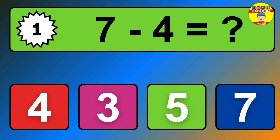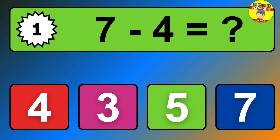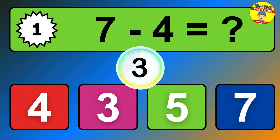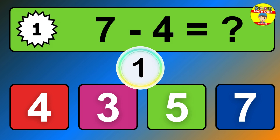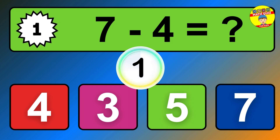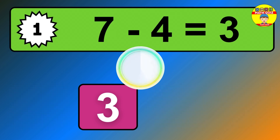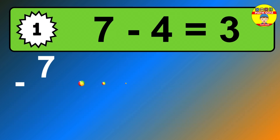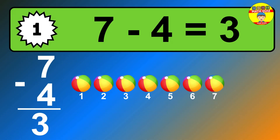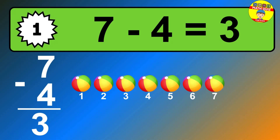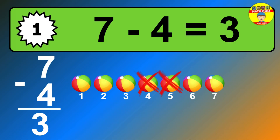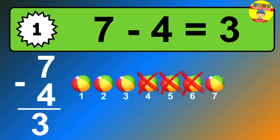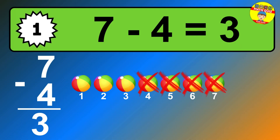Question 1. 7 minus 4 equals what? So the answer is 7 minus 4 is 3. Let's count it. 1, 2, 3.